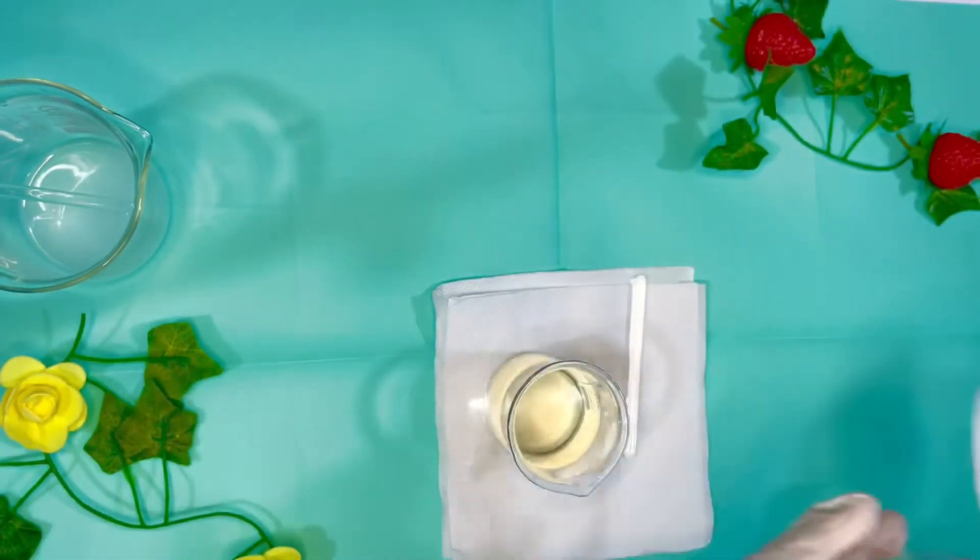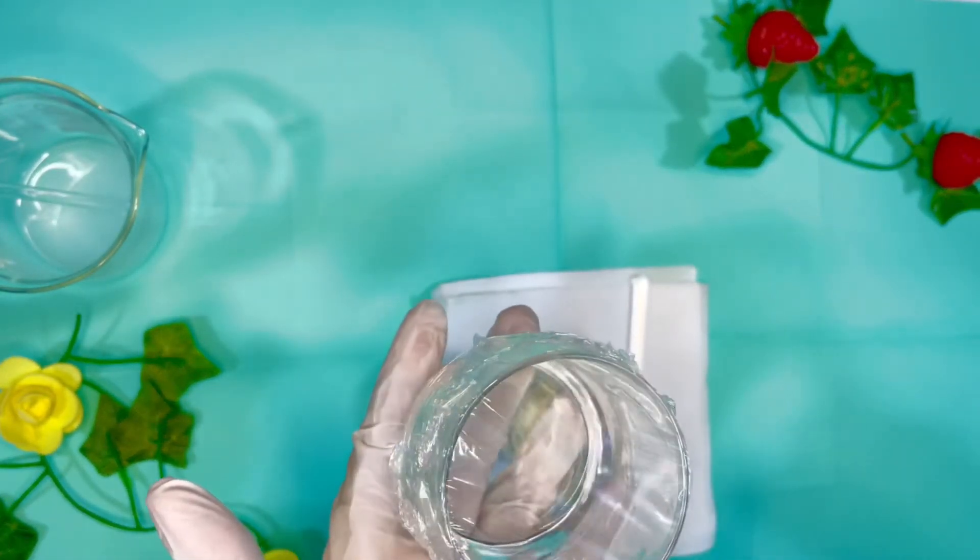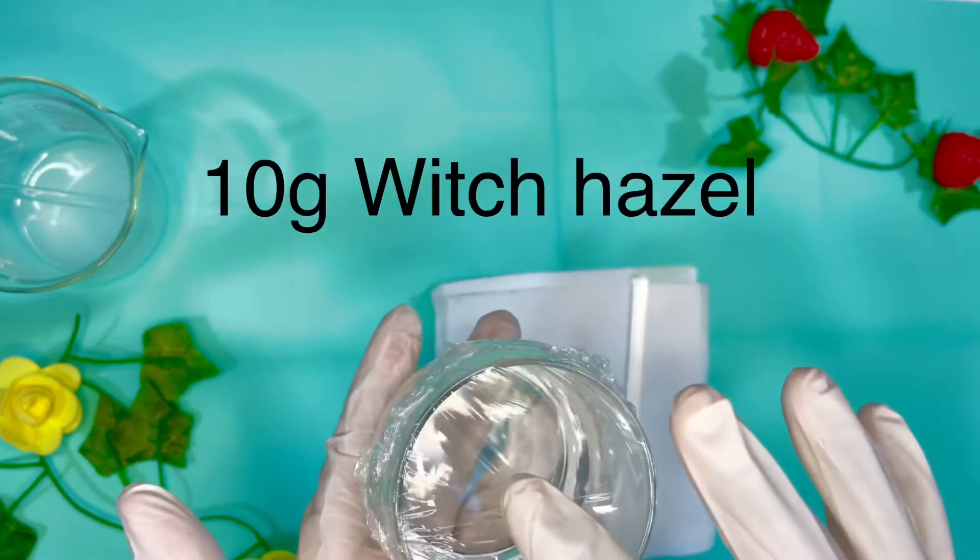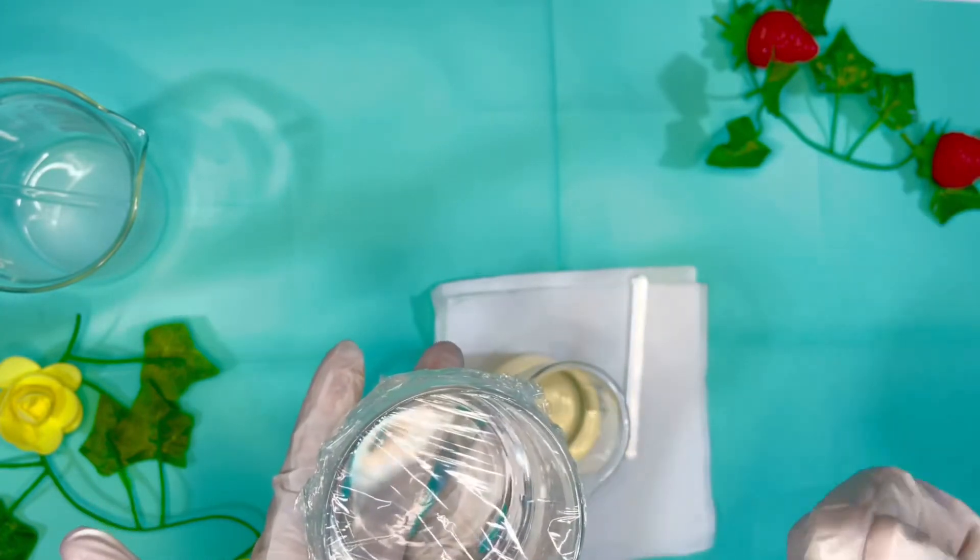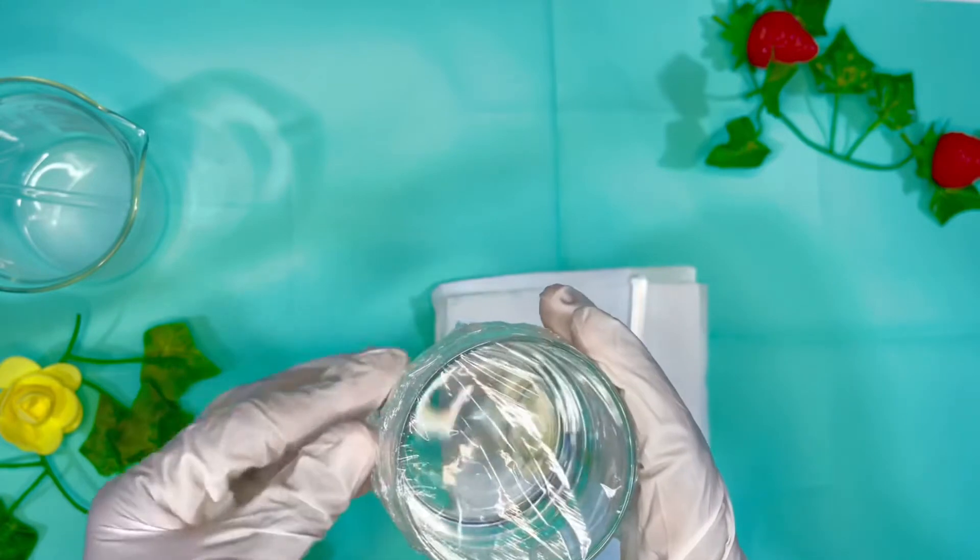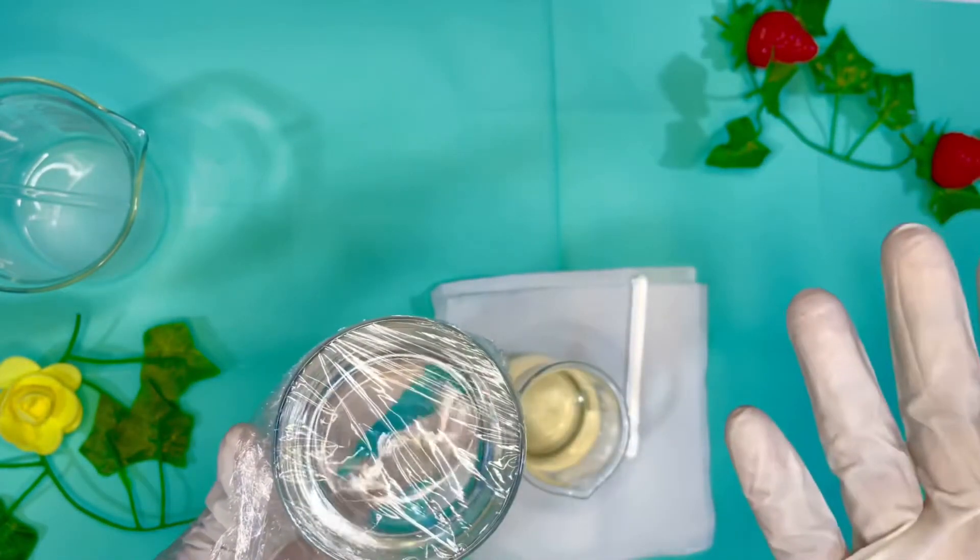So I'm gonna add it into my Phase B. And then the next ingredient that I'm gonna add is my witch hazel, which is 10%, that is 10 grams, because we are making 100 grams batch today. So in there I have 10 grams of witch hazel extract that contains 14 grain alcohol.